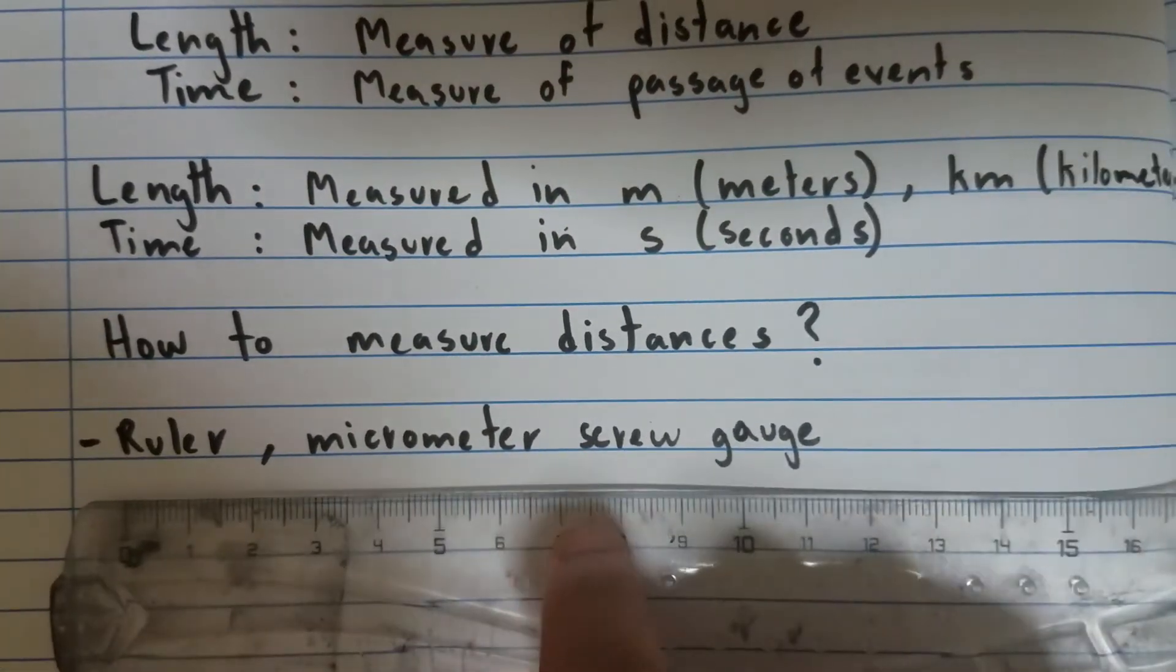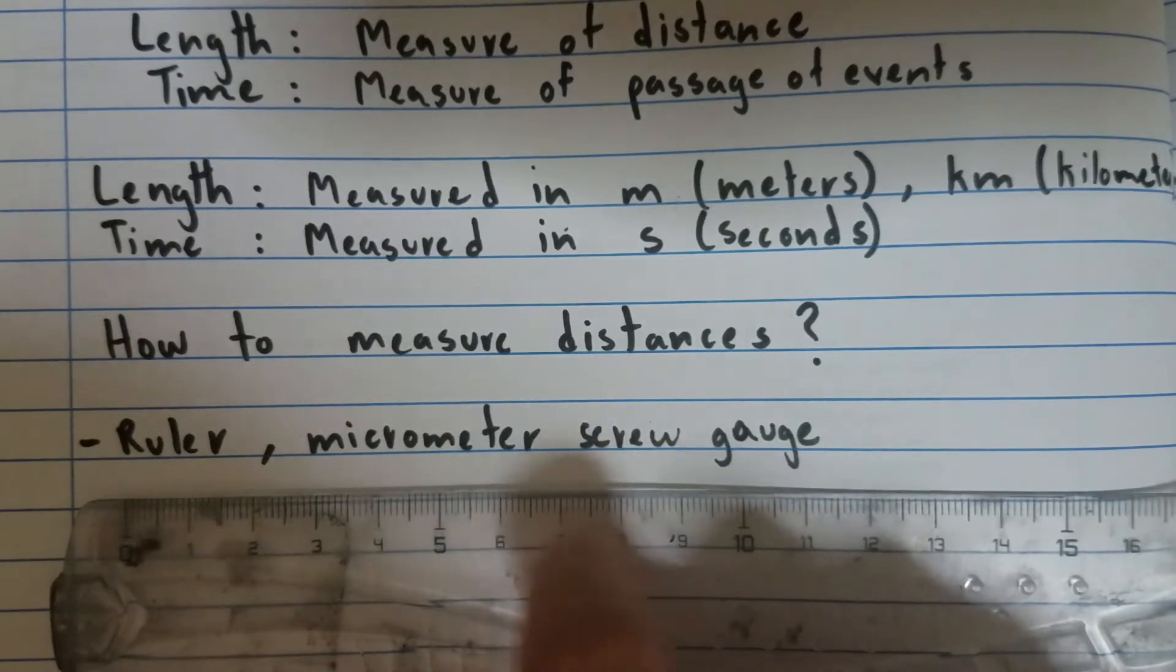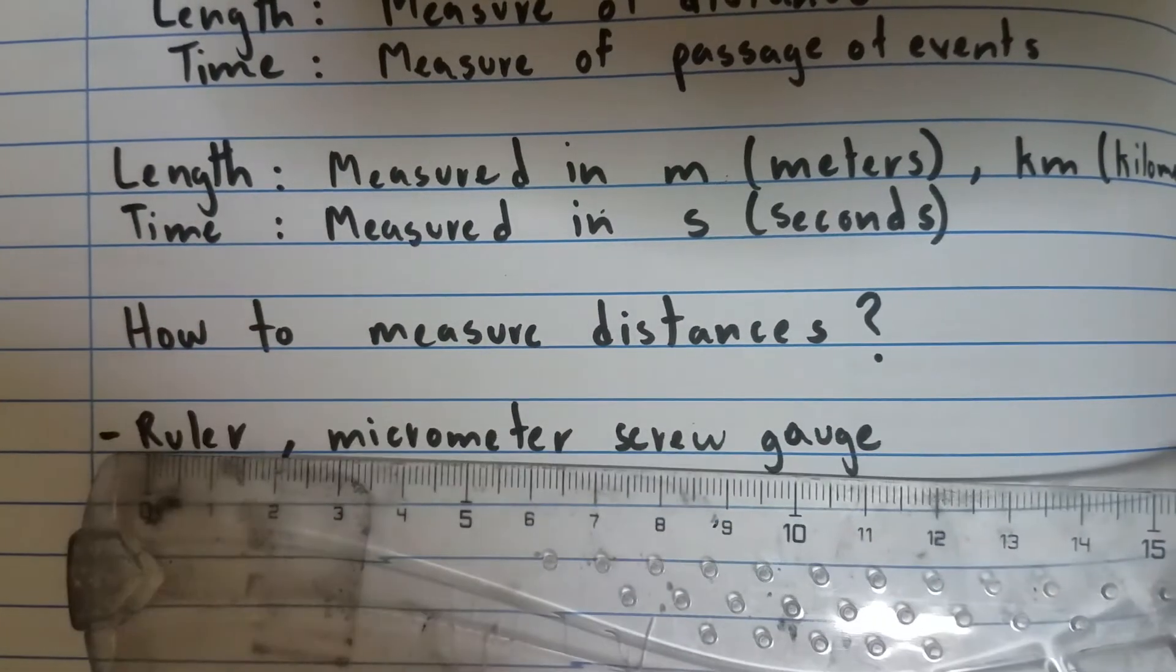Each of these gratings, the bigger ones, the gap between is a centimeter, which is one hundredth of a meter.